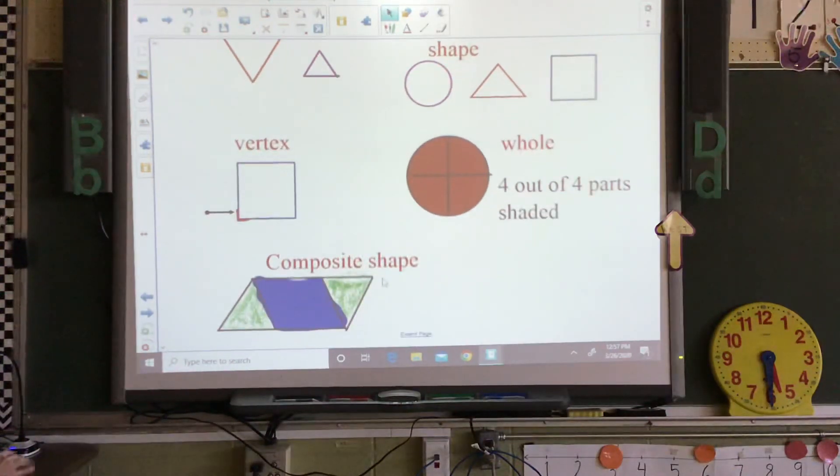And our last one that will be on your last page is called a composite shape. A composite shape is when you take more than one shape and put them together to make a new shape. And that is your vocabulary parts.